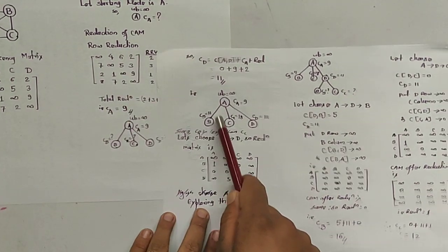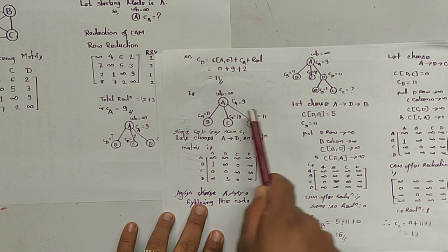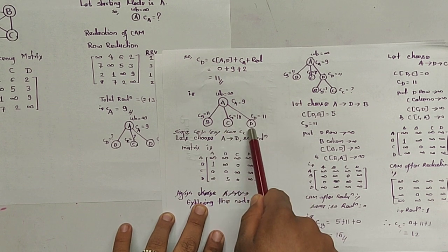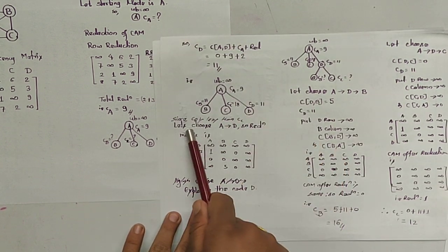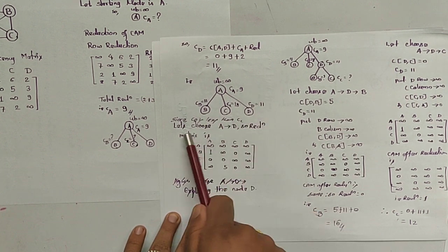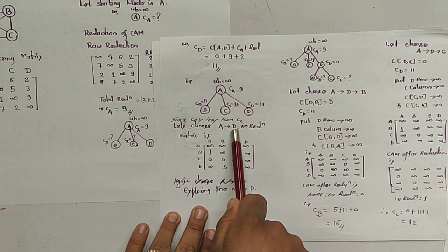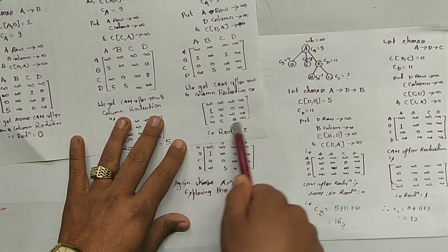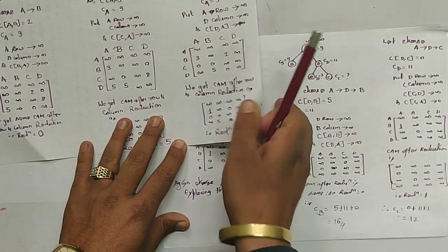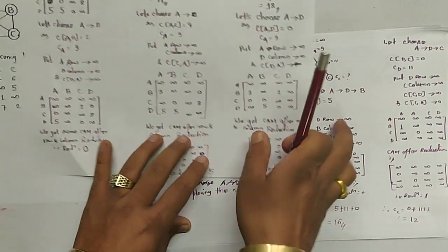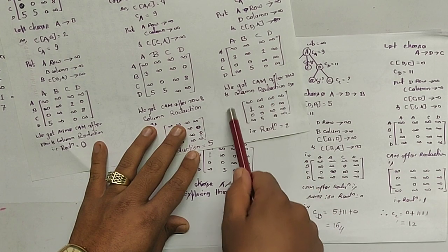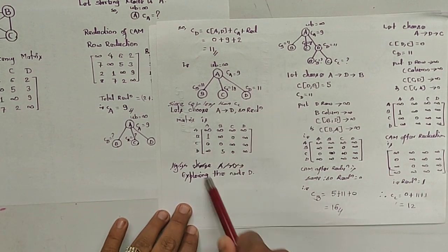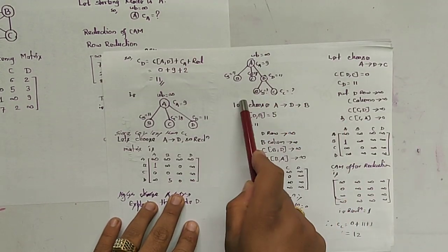Costs of B and D are both 11, and cost of C is 18 which is greater. I choose node D — you can choose B also. Since C is greater than 11, we select node D and the path is A to D. The reduced matrix used when moving from A to D is applied going forward, so we now use the A-to-D reduction matrix.